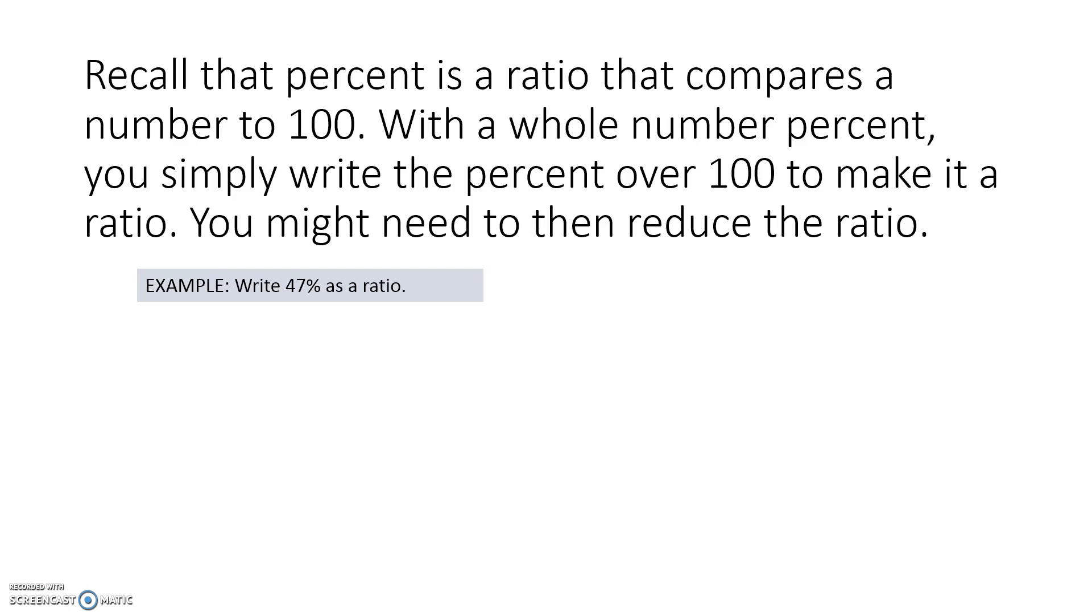Let's write 47% as a ratio. We simply write the percent over 100, and you get 47 to 100.